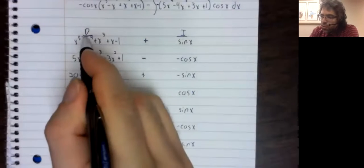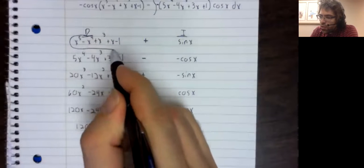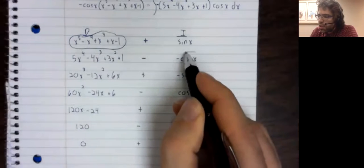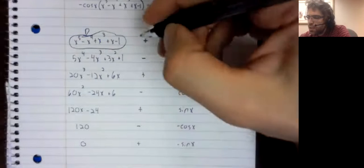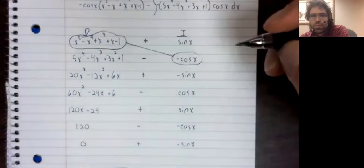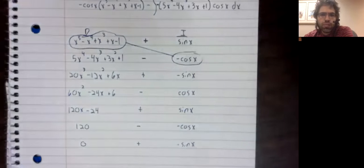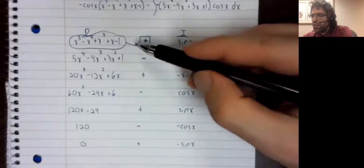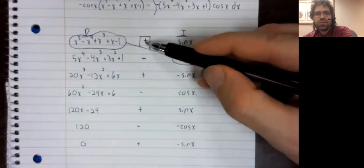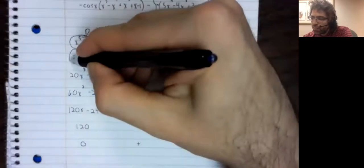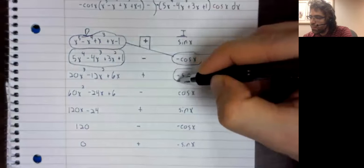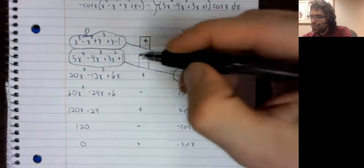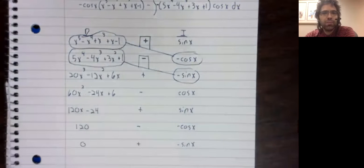And now, these terms over here are going to be multiplied by these terms over here. And for each of these terms, we're going to look at the sign above this connecting line.